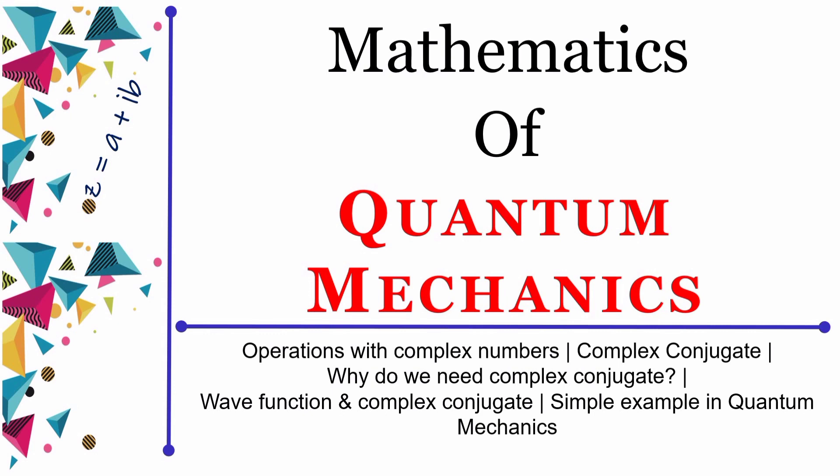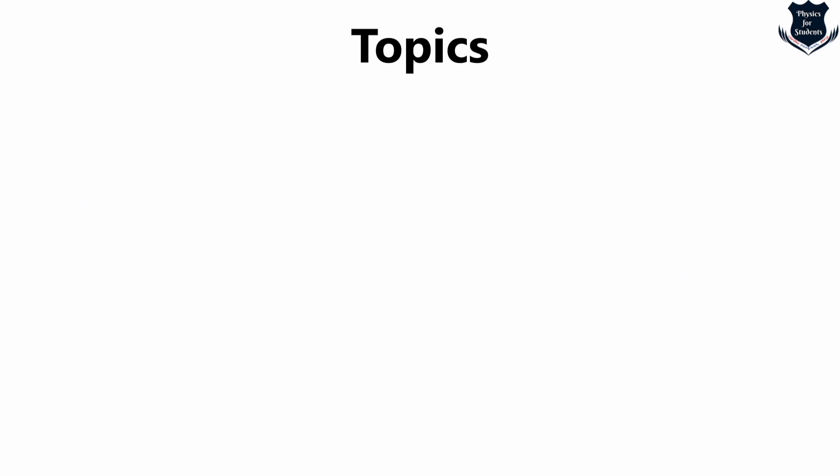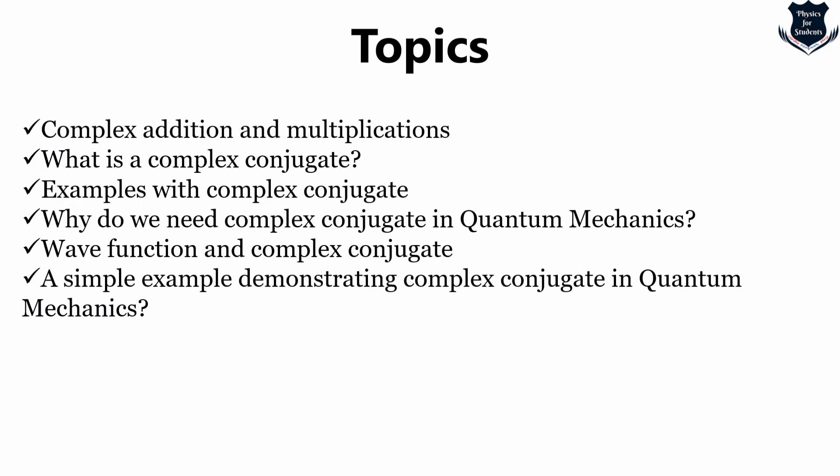Let us find out what topics we are covering today. We are covering first the addition and multiplication of complex numbers, then we will understand what is a complex conjugate, examples with complex conjugate, and most importantly the need of a complex conjugate in quantum mechanics. We will look into wave functions and complex conjugate with a simple example using the concept of quantum mechanics.